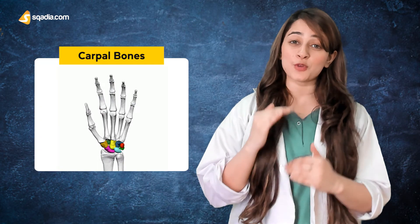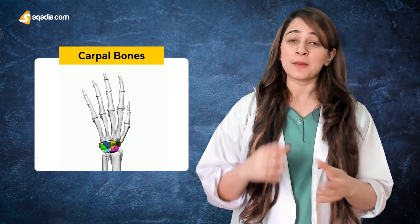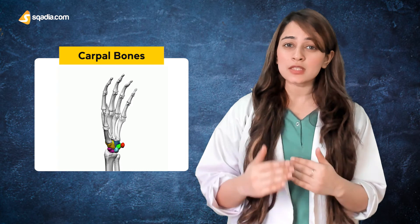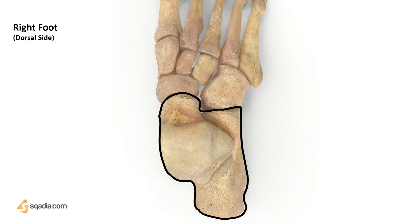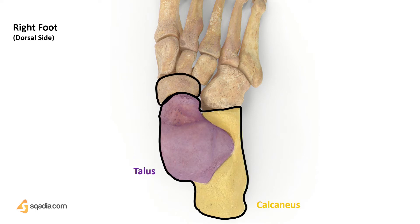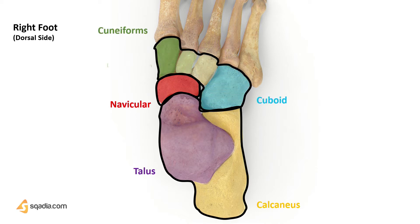If you recall, the carpals of your hands are arranged in two rows — the proximal one and the distal one. But compared to the carpal bones, the tarsals are arranged in three rows: the proximal, intermediate, and the distal rows. The proximal row, present in the hindfoot, consists of the talus and the calcaneus. The intermediate row contains one bone, which is the navicular. And the distal row has four tarsal bones — the cuboid, and the three cuneiforms: the lateral, intermediate, and medial cuneiform.